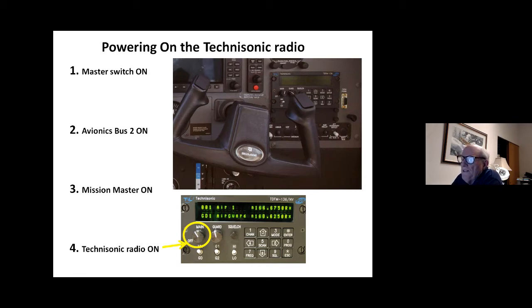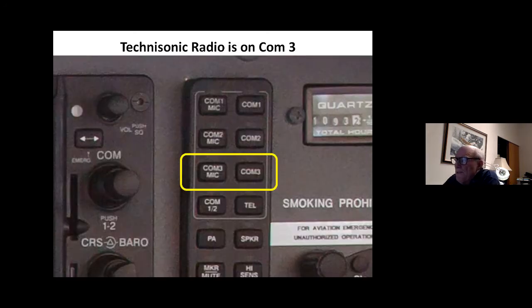Mission master and Technasonic are really the two things that an observer will want to remember to power up the Technasonic radio to do that radio check prior to taxi. The audio, the receive audio and the microphone control for the Technasonic is on com 3. Here's the third audio panel, the observer's audio panel that's visible here. So com 3 to transmit on the Technasonic, com 3 to listen on the Technasonic radio. Technasonic's on com 3.